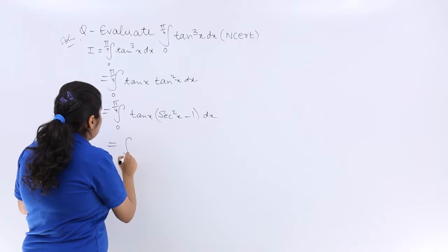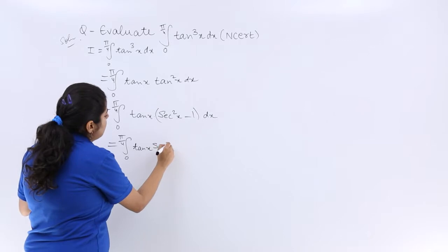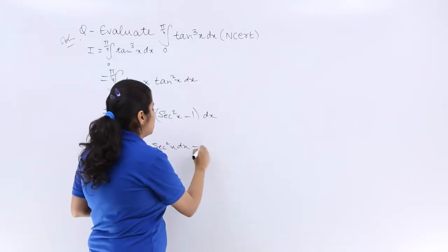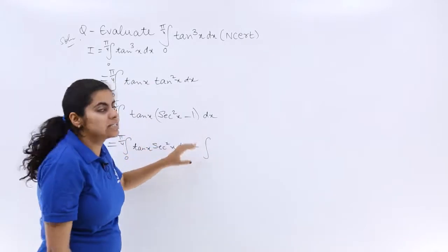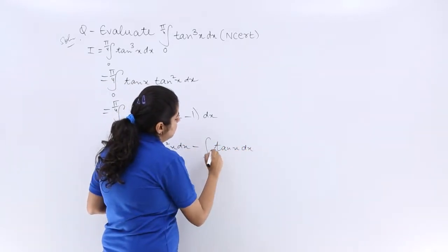Now let me open the brackets, so it is ∫₀^(π/4) tanx·sec²x dx minus ∫₀^(π/4) tanx dx. Because the limits are there, when I open up the brackets, with tanx also, along with dx, the limits should come.